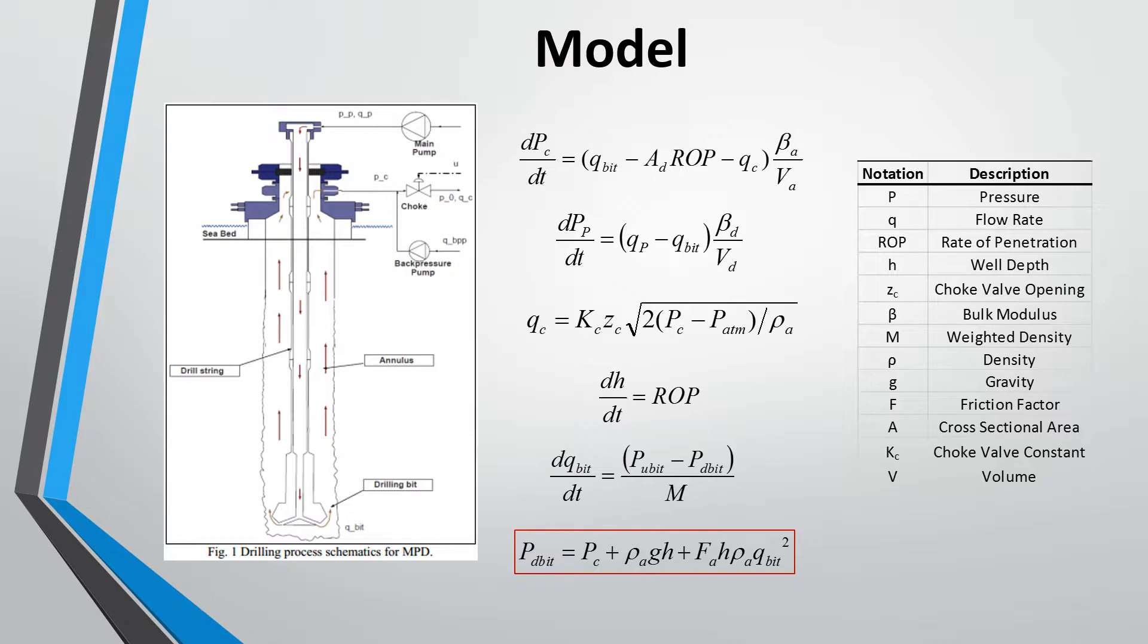For our process we had two manipulated variables which are the pump flow rate and the choke valve opening, and these two were manipulated in order to control the pressure here on the drill bit, which is something that you want to control in this process to avoid any kicks or to handle what's going on as you're drilling in search for hydrocarbons. For our model we used something we found in literature that has four differential equations and then a nonlinear equation.